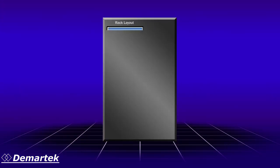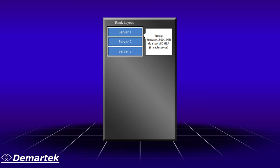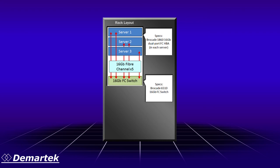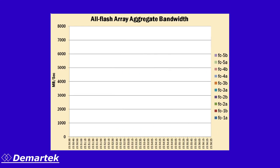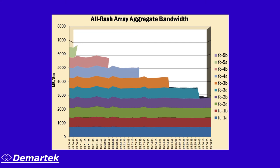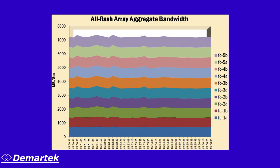We configured an Oracle rack environment using three servers, each having a dual port Brocade 1860 16 gig fiber channel adapter. We connected five of the six total 16 gig fiber channel host ports to a Brocade 6510 fiber channel switch. A RAMSAN 630 storage system was connected to that switch with 10 8 gig fiber channel connections. The test consisted of a simple SQL SELECT statement that accessed all 10.2 billion rows from the database. We ran this set of tests multiple times and observed very consistent performance, achieving a sustained rate of more than 7200 megabytes per second every time. We observe strong performance for both transaction-intensive workloads and bandwidth-intensive workloads with the Brocade 16 gig fiber channel solutions.